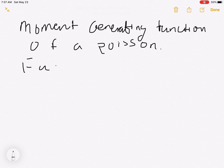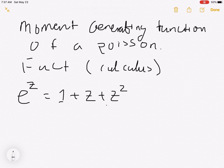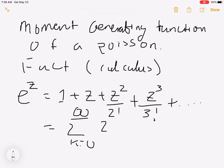Here's a fact that we'll need from Calculus. It says e to the z is going to be 1 plus z plus z squared over 2 factorial plus z cubed over 3 factorial, and this keeps going infinitely. We can write this as the infinite sum from k equals 0 to infinity of z to the k over k factorial.